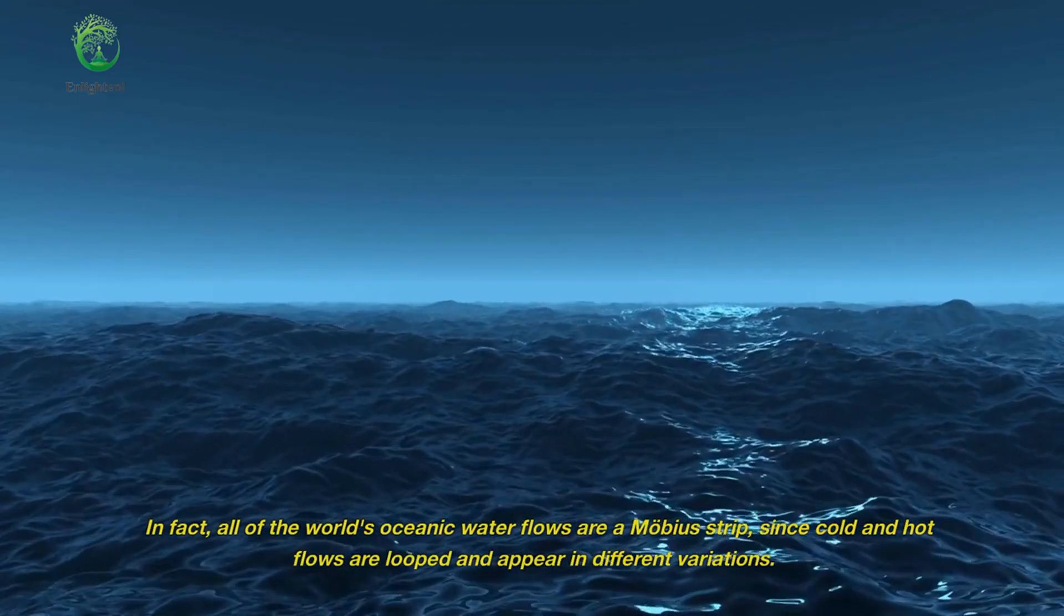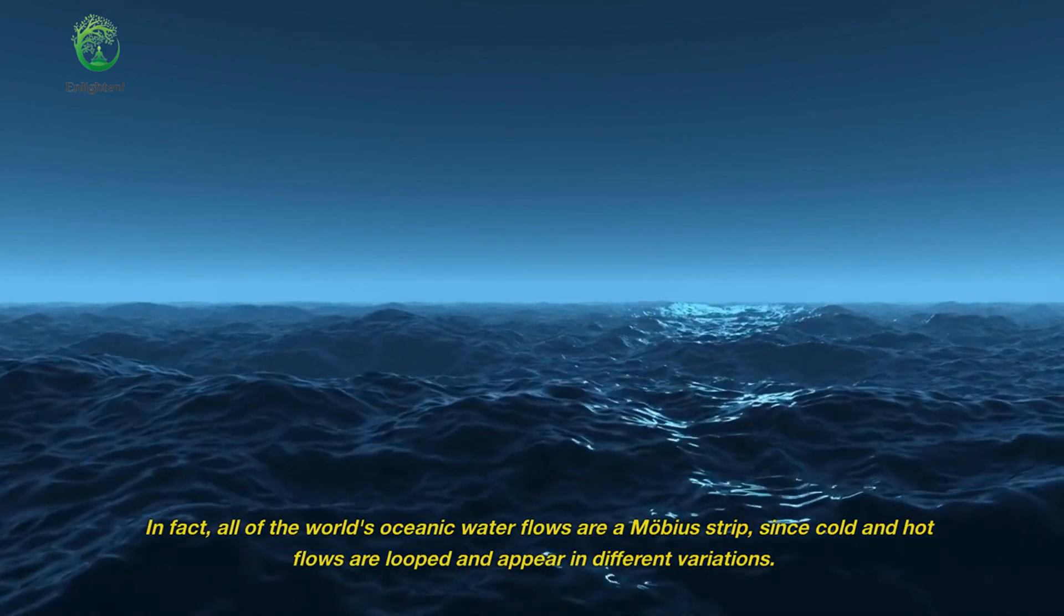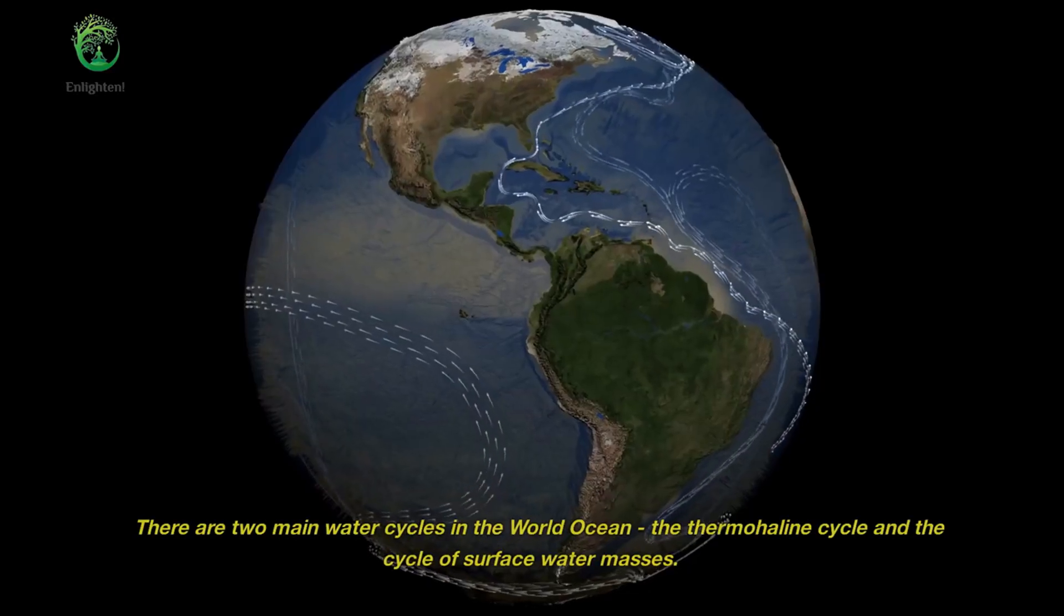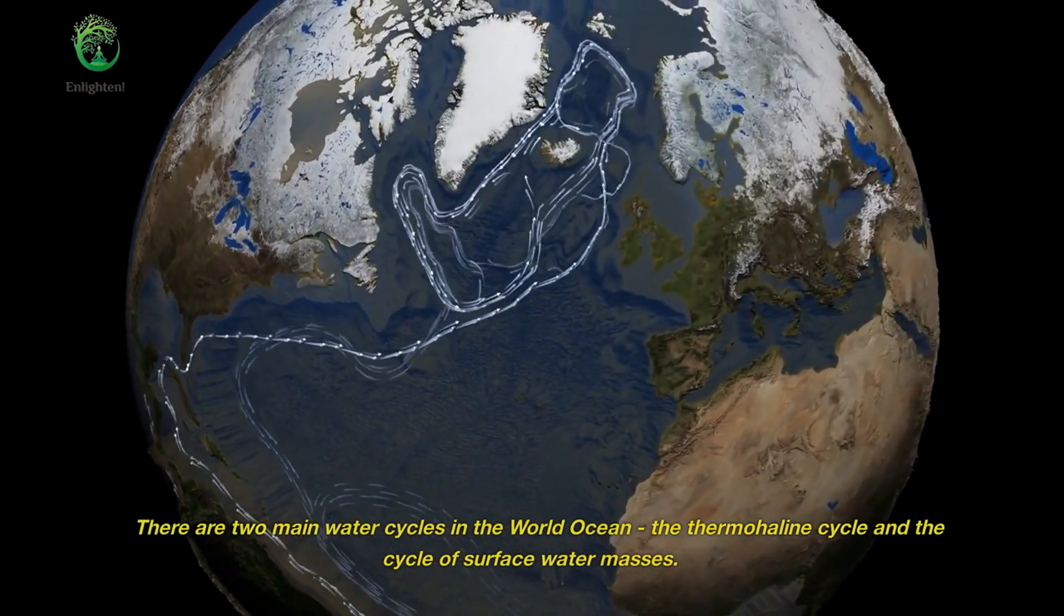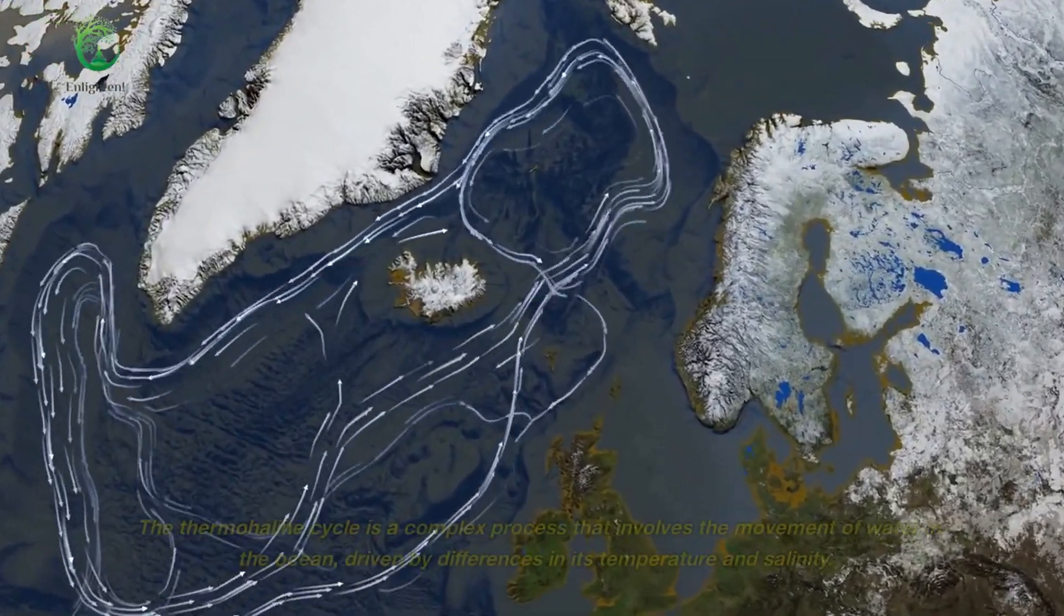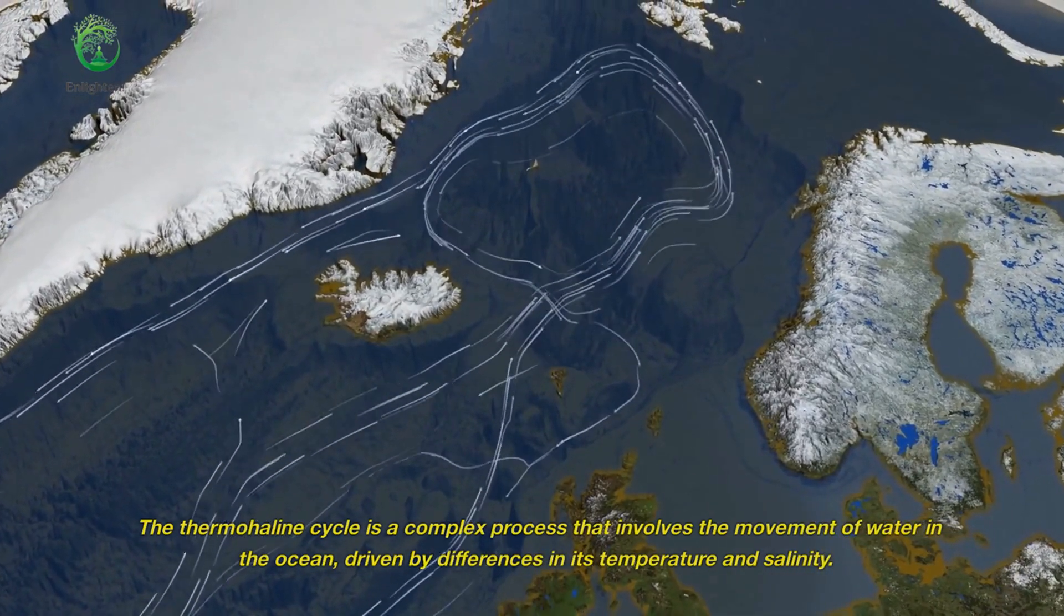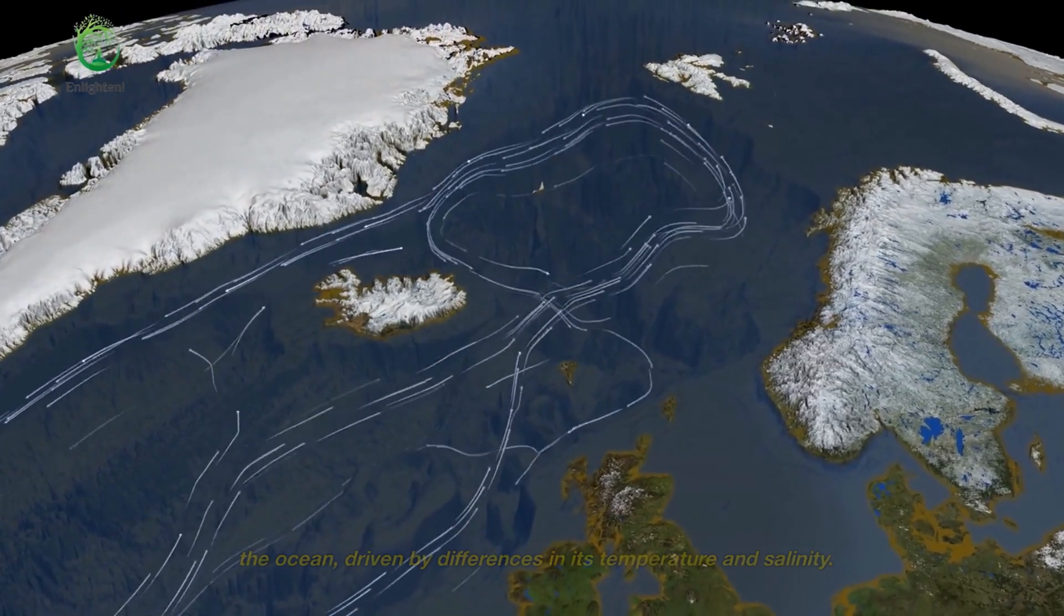In fact, all of the world's oceanic water flows are a Mobius strip, since cold and hot flows are looped and appear in different variations. There are two main water cycles in the world ocean: the thermohaline cycle and the cycle of surface water masses. The thermohaline cycle is a complex process that involves the movement of water in the ocean, driven by differences in its temperature and salinity.